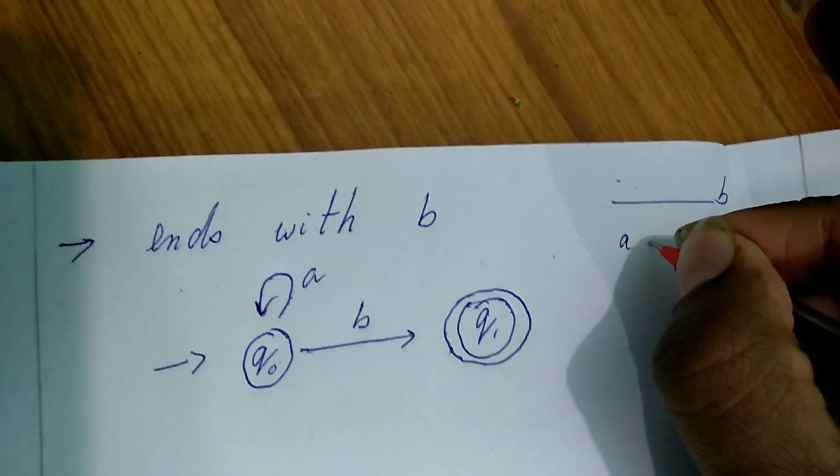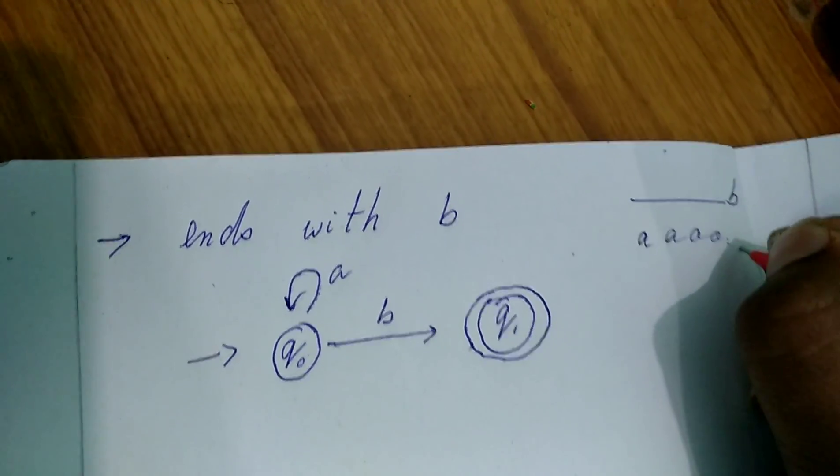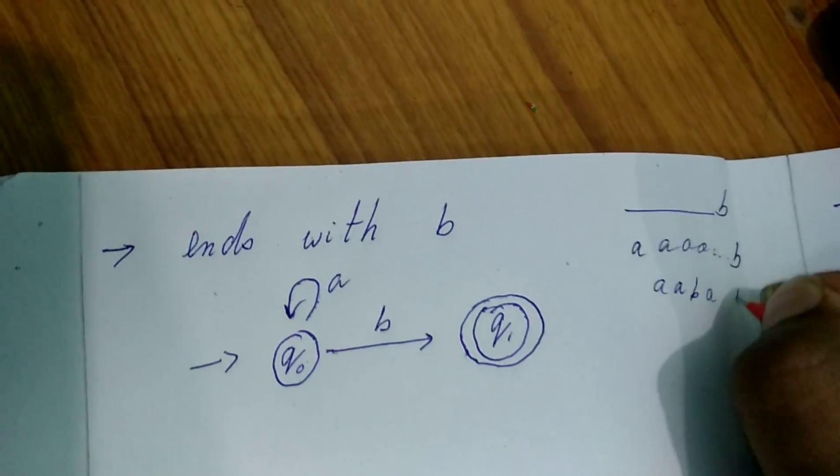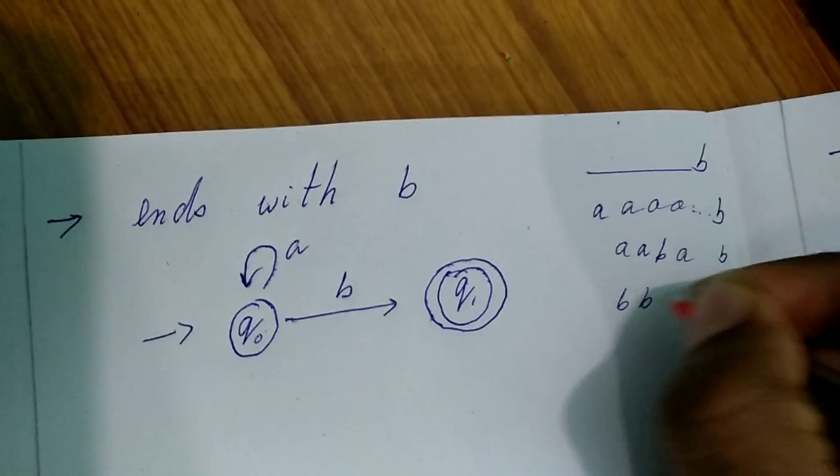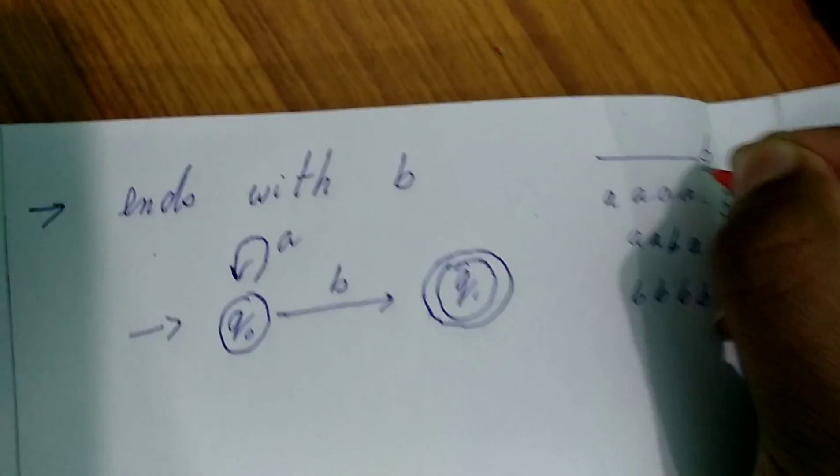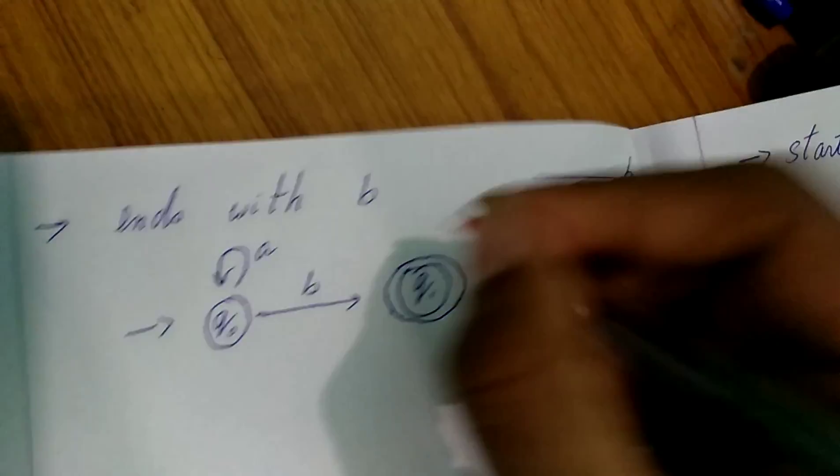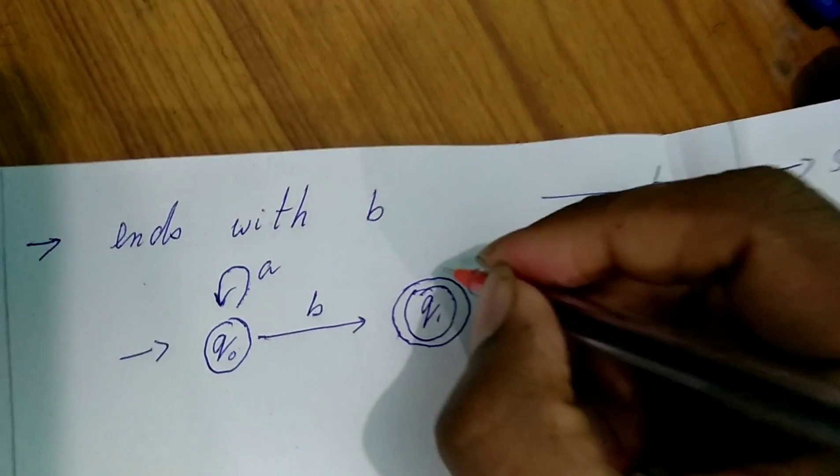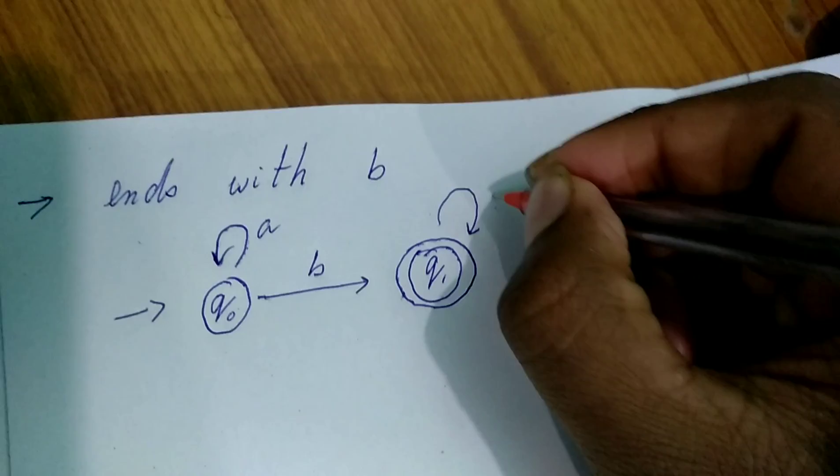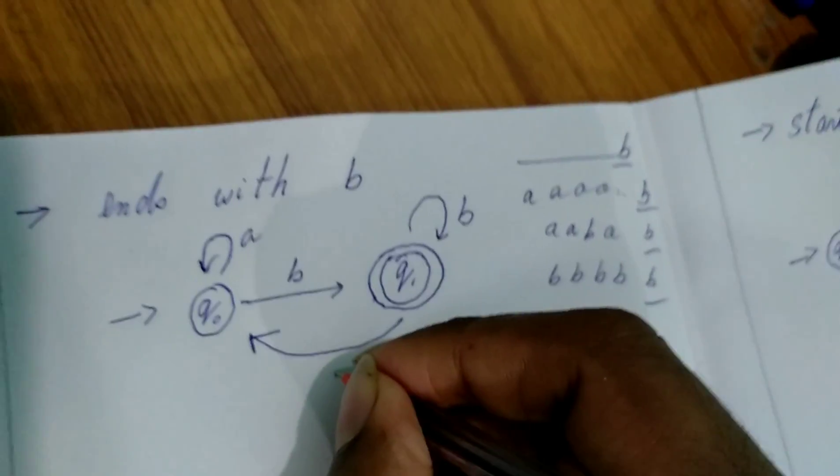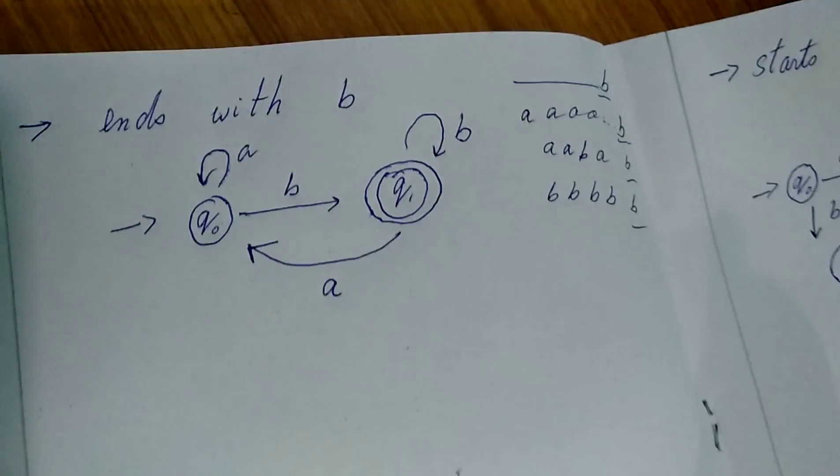So it's possible to have A, A, A, A, A a number of times, but the last should be B. A, B, A, B, B, B, B is also possible. The only requirement: last letter B. And we will make it as self-loop B. And here it comes back if it encounters with A.